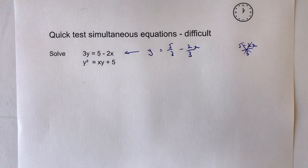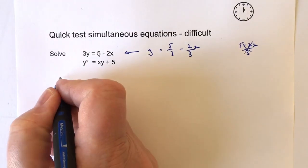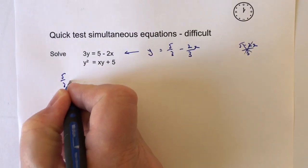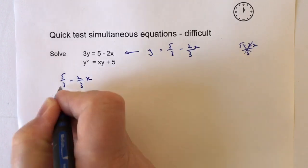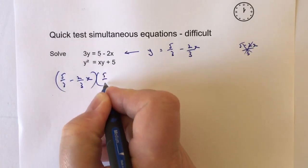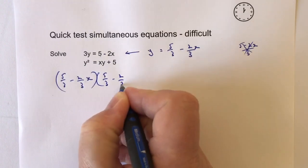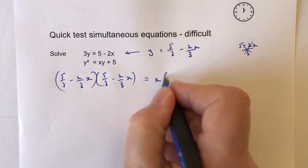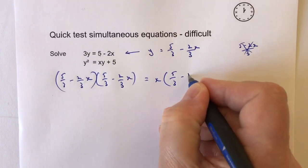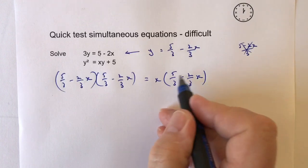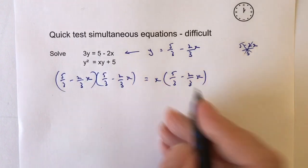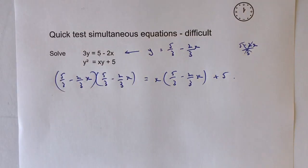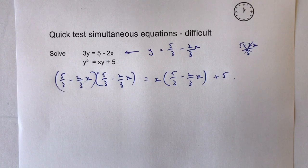So I'm going to take this value of y and plug it straight into the equation. This is where it's going to get a little bit complicated. On the left hand side I'm going to get (5 over 3 minus 2 over 3 x) and I'm going to square that — multiply it by itself. And that's going to be equal to x multiplied by (5 over 3 minus 2 over 3 x), plus 5. All I've done at this point is taken the value of y and substituted it back into the equation.